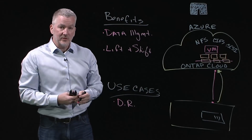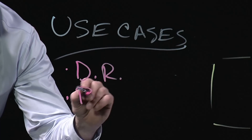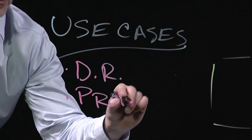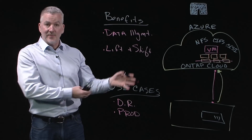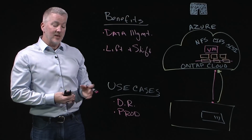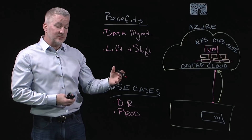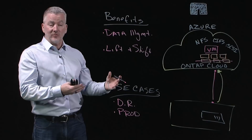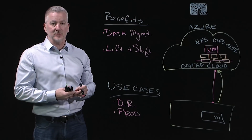Another lift-and-shift capability enables production workloads. Simply use SnapMirror again, move your data up to the public cloud, and use the same processes, procedures, and staff without having to retrofit to take advantage of things in Microsoft Azure.